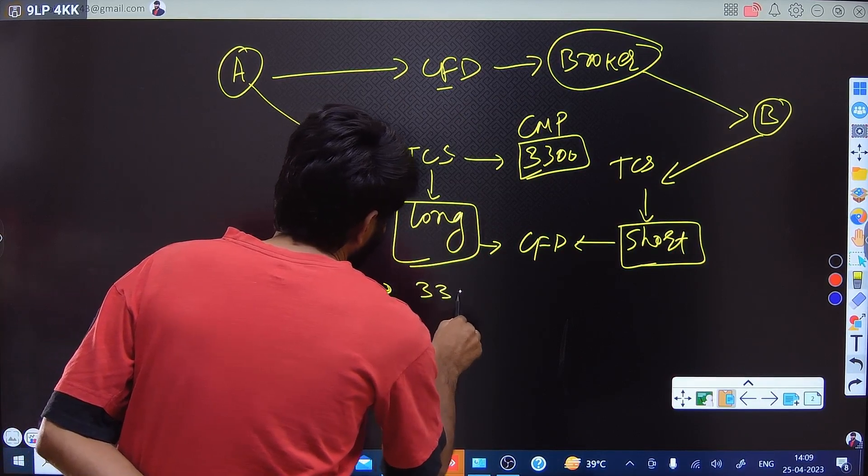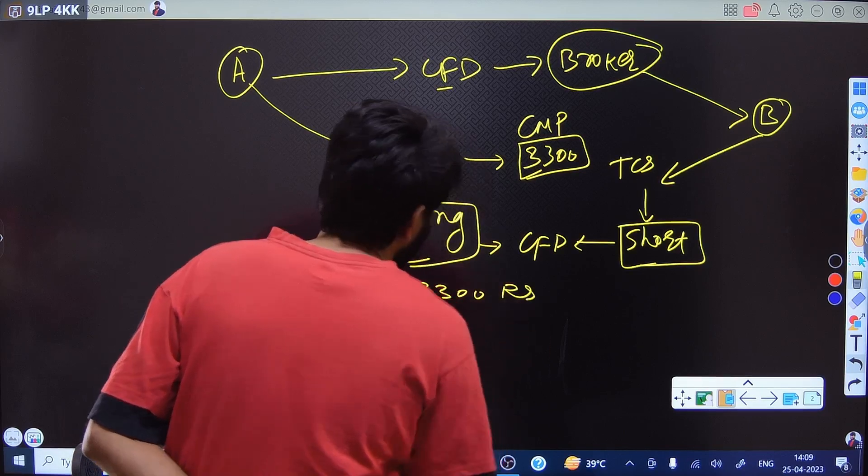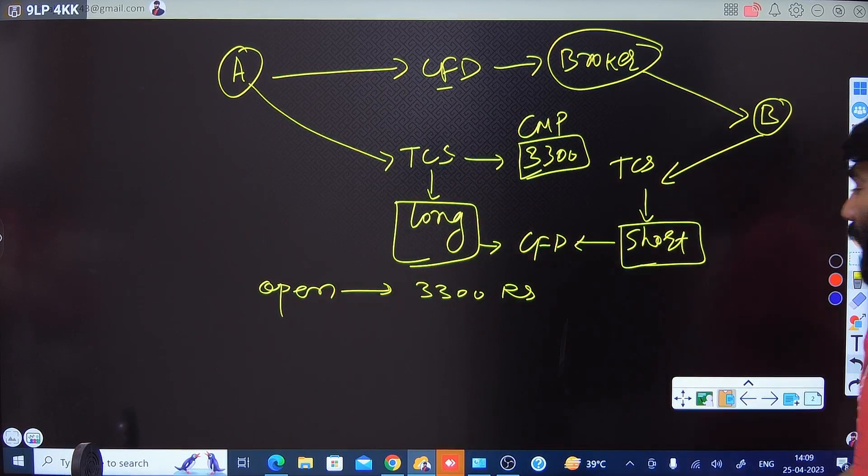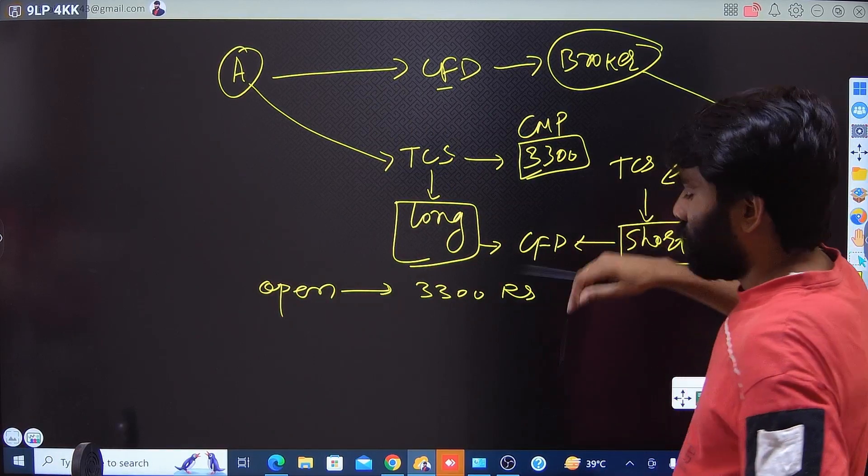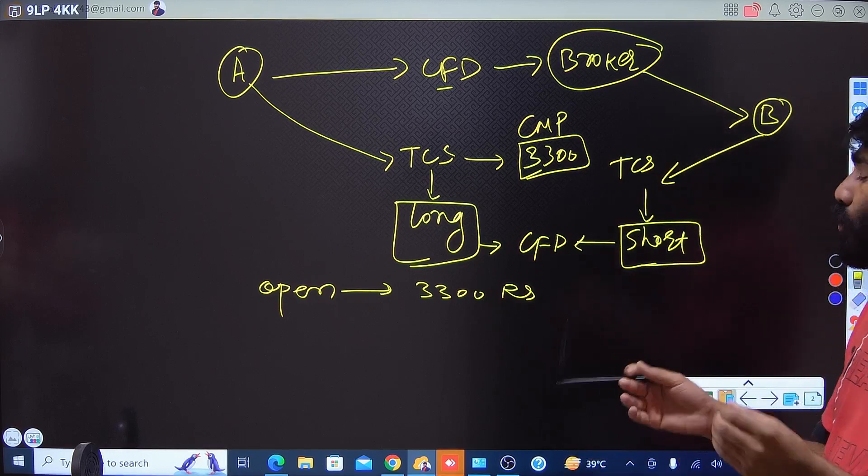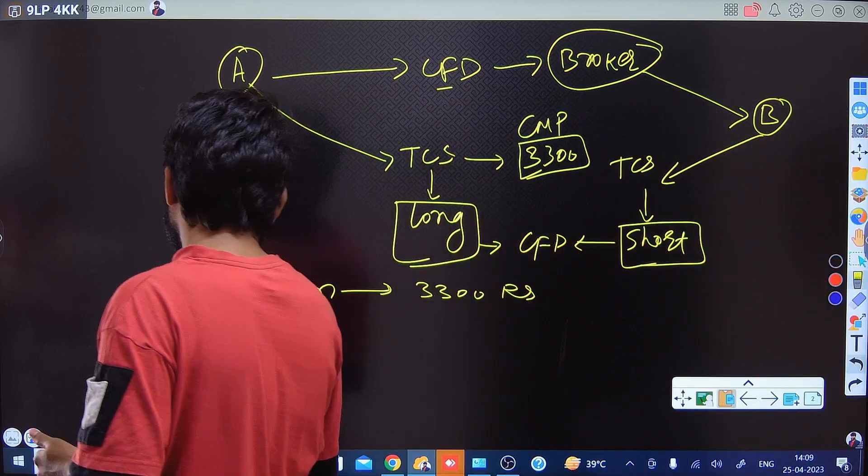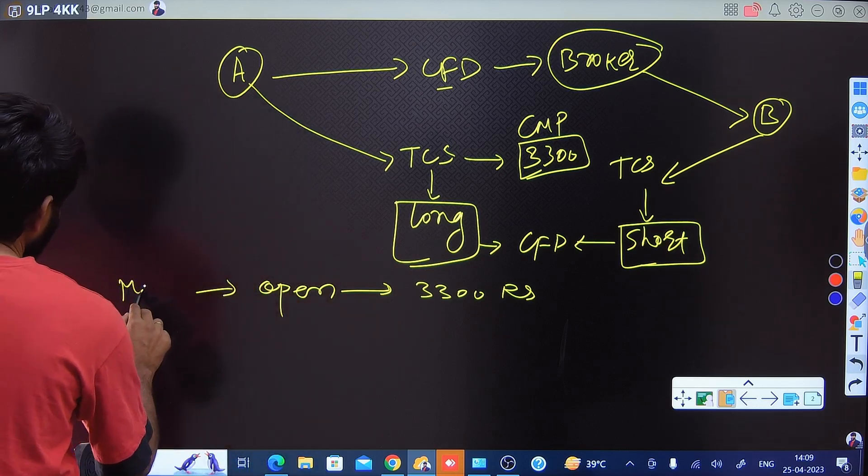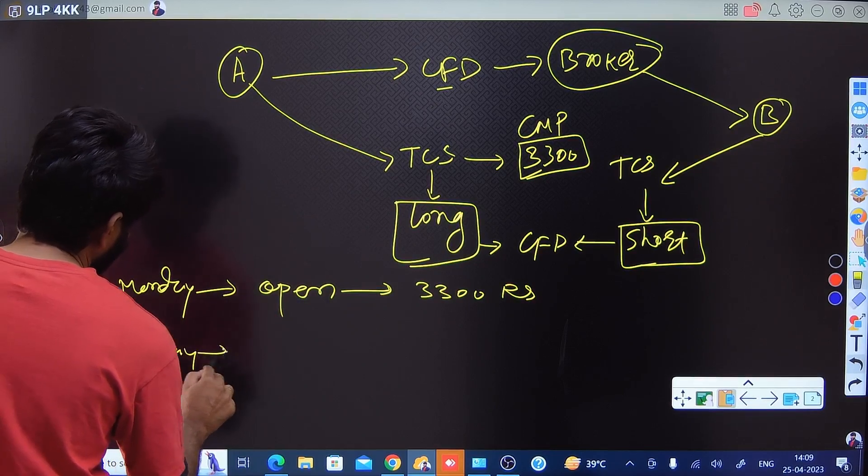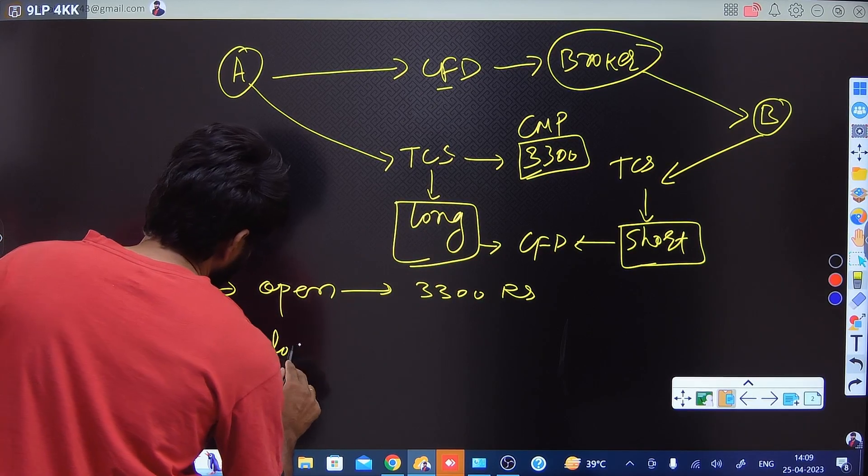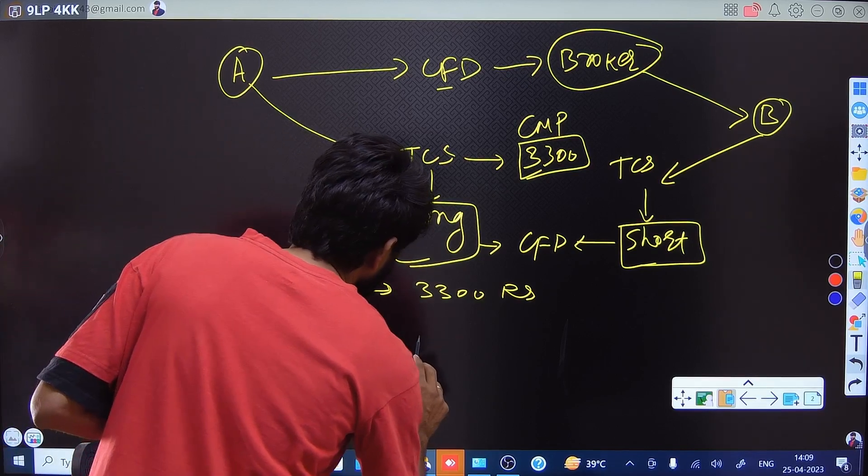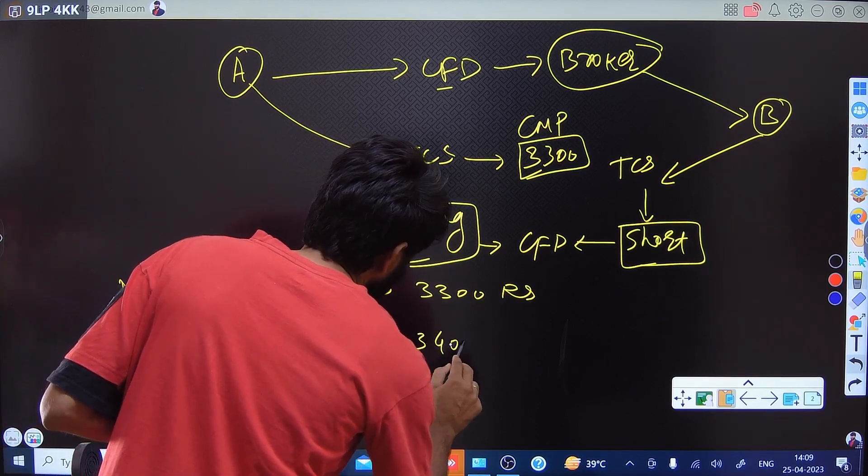They will open this particular contract at 3300 rupees, and up to whatever the settlement date would be, let's say within one week they want to close it out. So on Monday the contract will open, and Friday this contract will close.